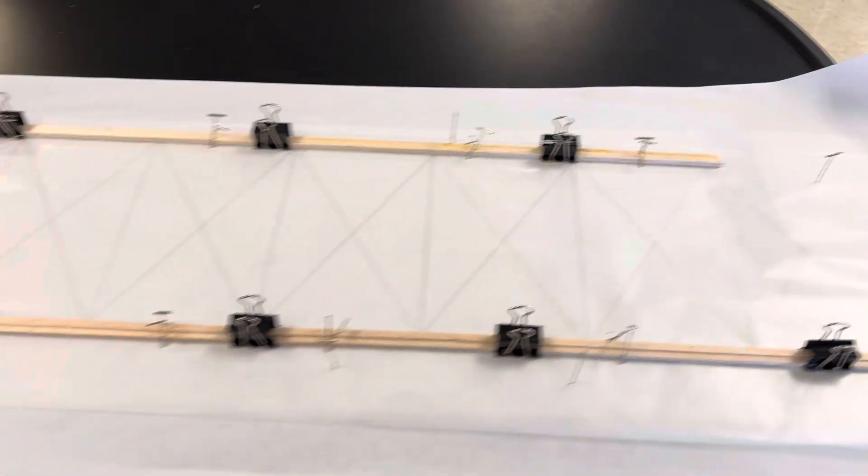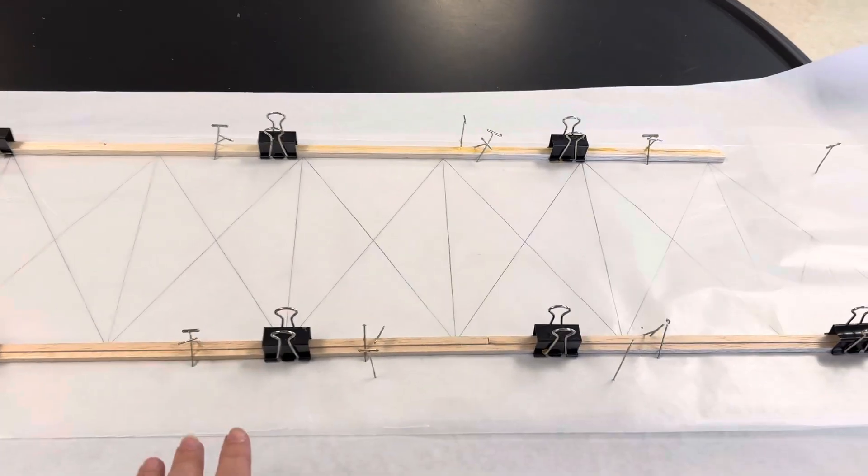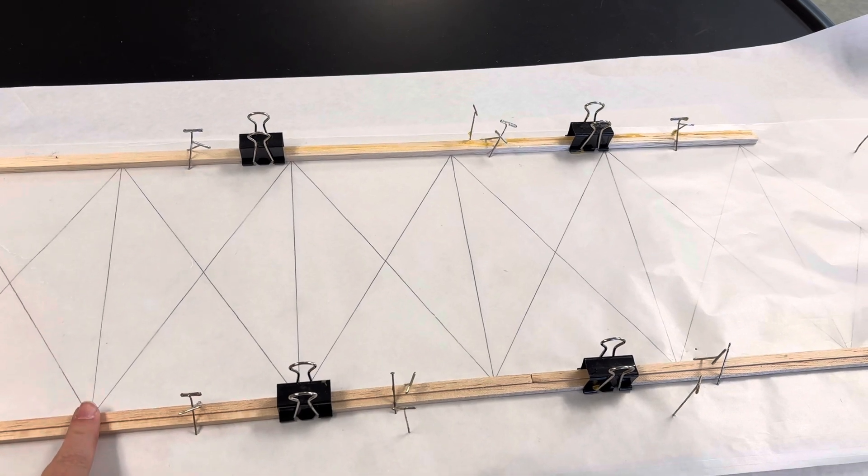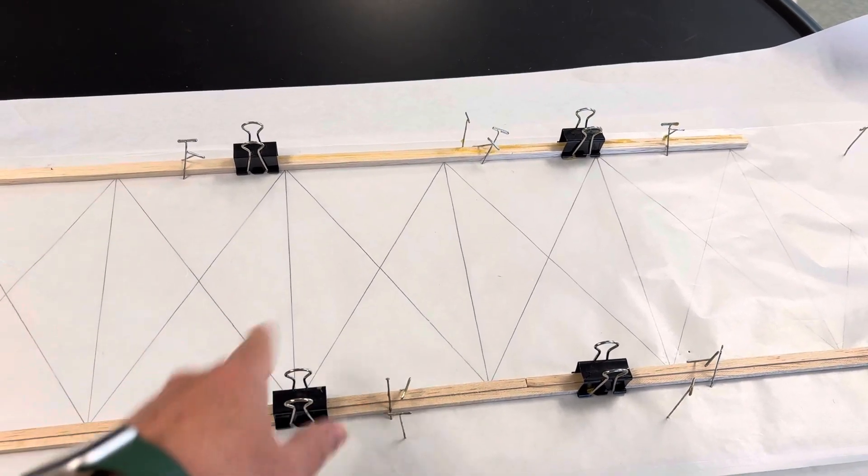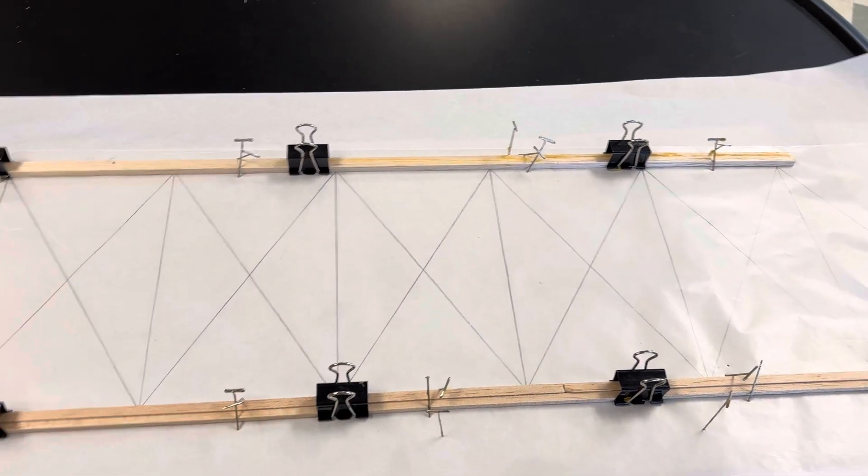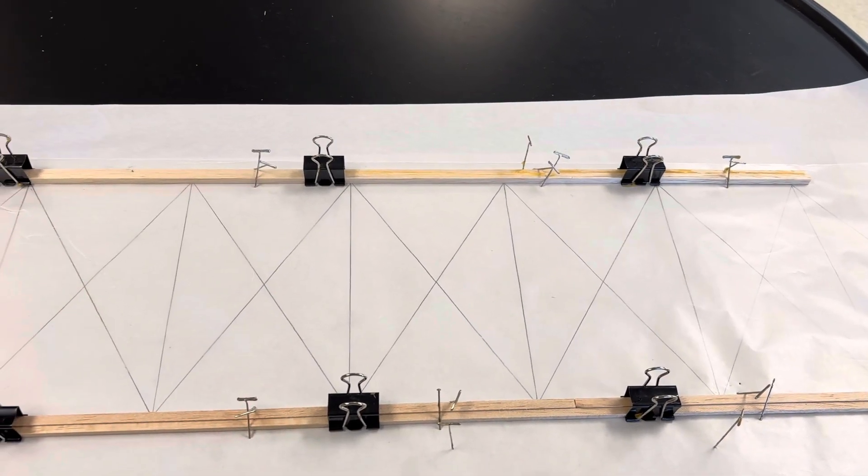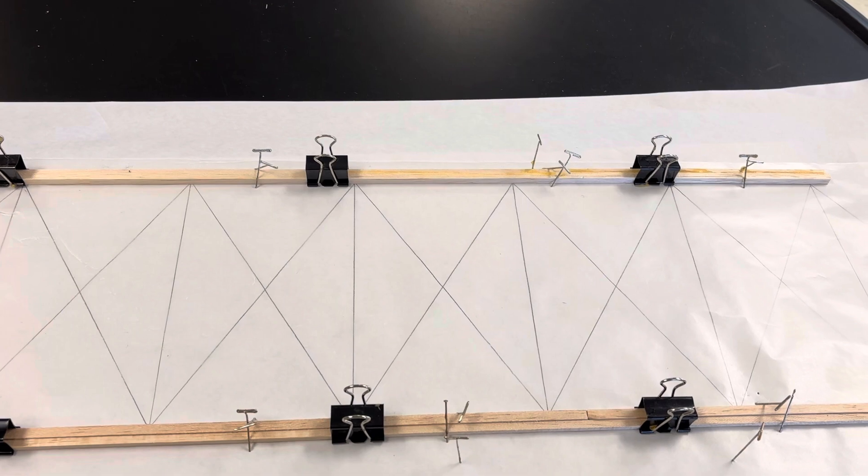Once you're done with this, what I would recommend doing is some smalls. So anything that you have up and down, I would do that in a small. And if you can, if possible, again, you're doing the math, anything that is diagonal, you would do this in mediums.